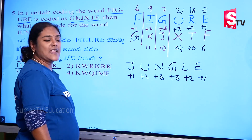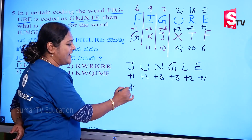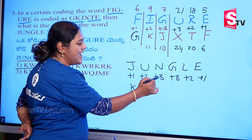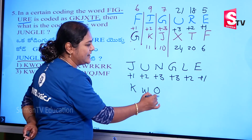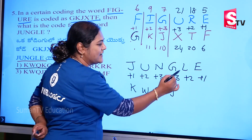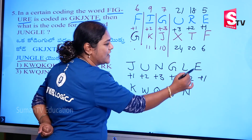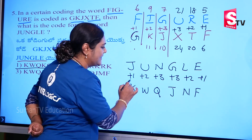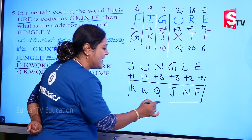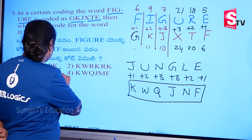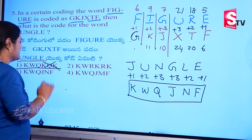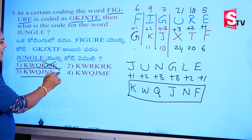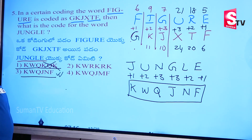Now computing: J = 10 + 1 = 11 → K. U = 21 + 2 = 23 → W. N = 14 + 3 = 17 → Q. G = 7 + 3 = 10 → J. L = 11 + 2 = 13 (wait: 12 + 2? actually 11 + 2 = 13) → N. E = 5 + 1 = 6 → F. So JUNGLE is coded as K, W, Q, J, N, F. That is Option 3.